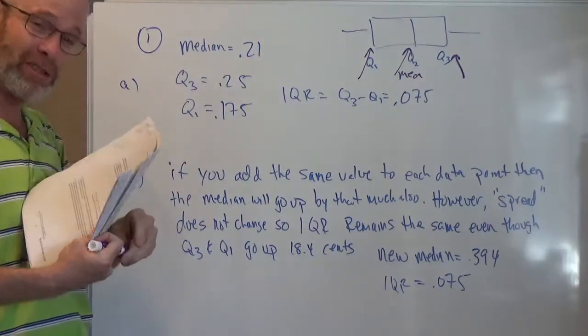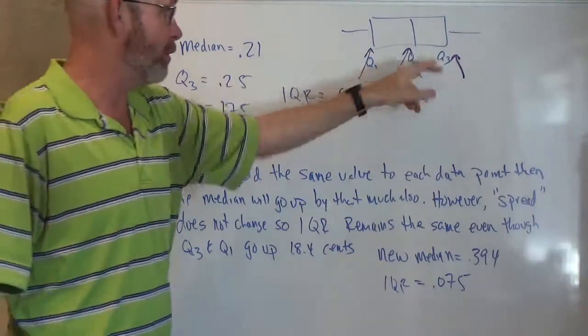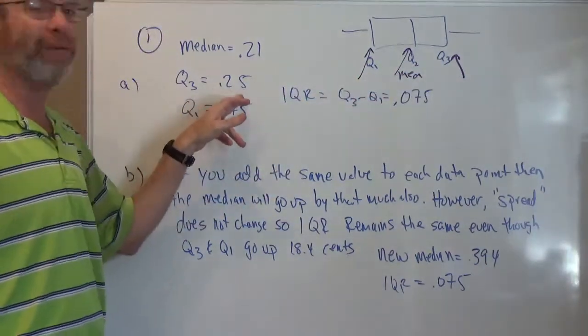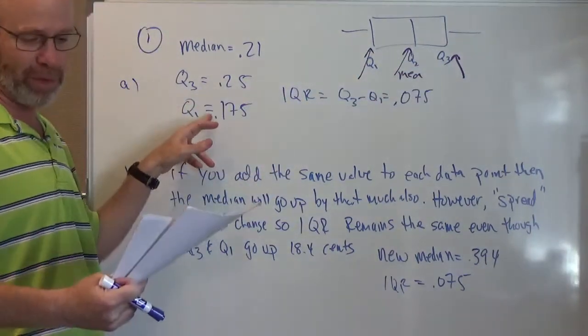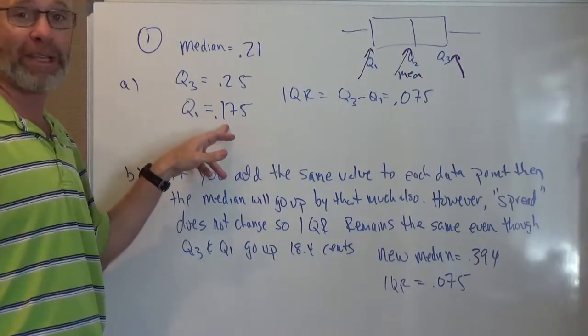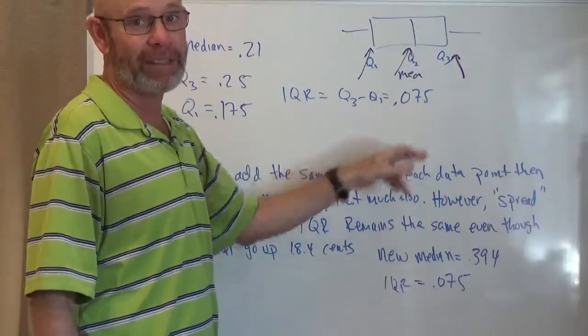Just a quick reminder, the interquartile range is the difference between the third quartile and the first quartile. So I had 25 cents for the third quartile, which is pretty much right on it, 17.5 cents for the first quartile, so the interquartile range is just seven and a half cents.